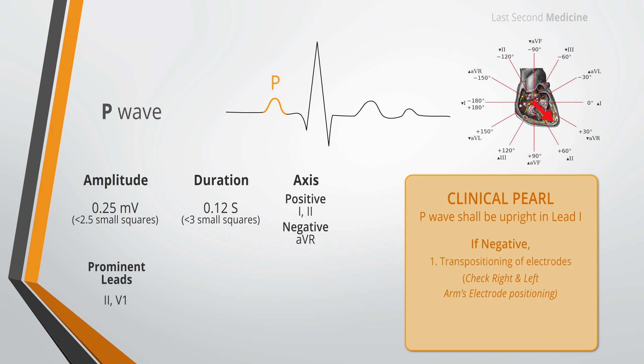A negative P wave in lead 1 may be due to incorrect recording of the electrocardiogram with transposition of the left and right arm electrodes. So it is important to check the electrode position when you find a negative P wave in lead 1. Negative P wave in lead 1 may also be found with dextrocardia or abnormal atrial rhythms.